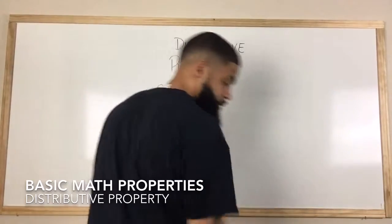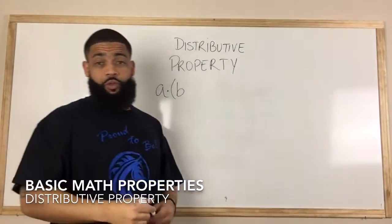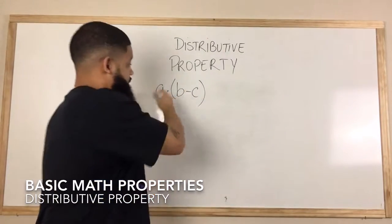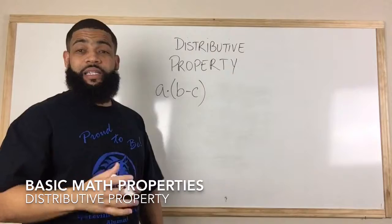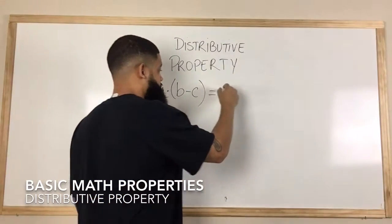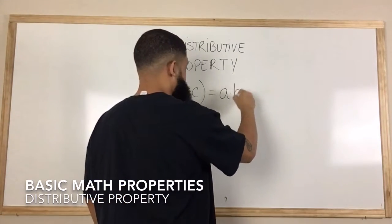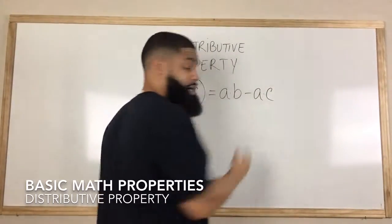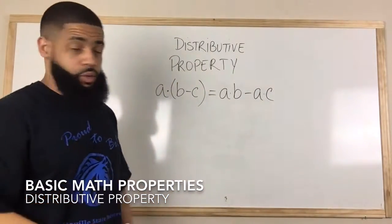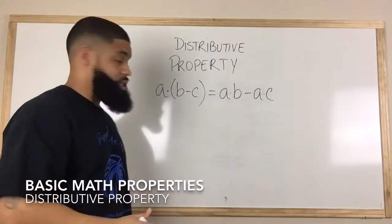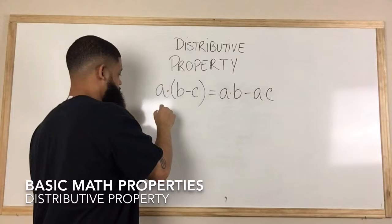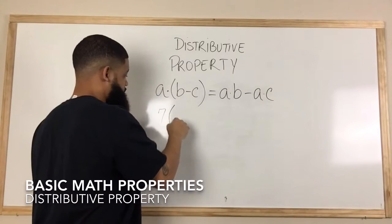With subtraction and the distributive property, we would have a times the quantity b minus c, which gives us a times b minus a times c. Let's use some values. In this case, we'll use 7 times the quantity 10 minus 4.